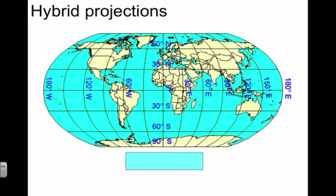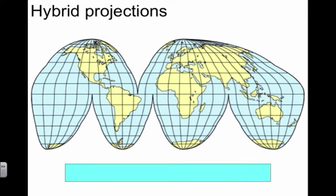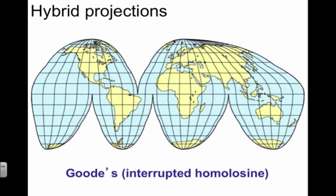Then we look at hybrid projections. This one's very commonly used—the Robinson projection. You're making a compromise between angular preservation and area preservation.